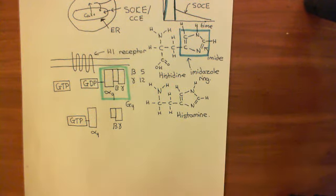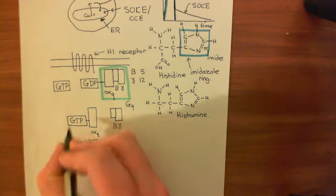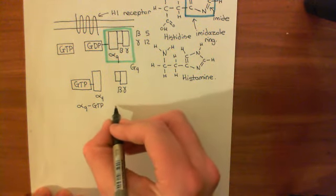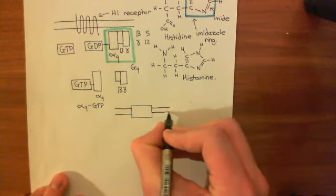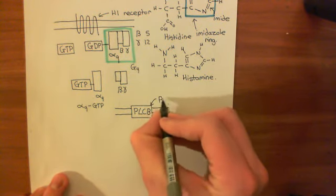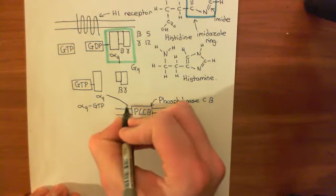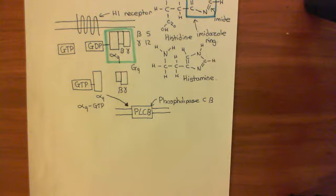Once you have the alpha Q-GTP subunit, it goes and activates another enzyme in the membrane of the cell — phospholipase C beta. Alpha Q-GTP activates phospholipase C beta, which begins to break down a component of the phospholipid bilayer known as PIP2. We'll continue this discussion in the next video.